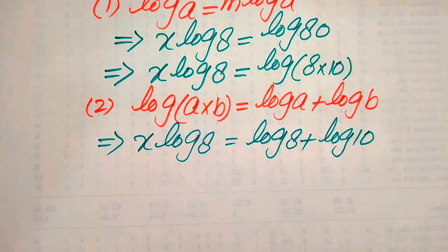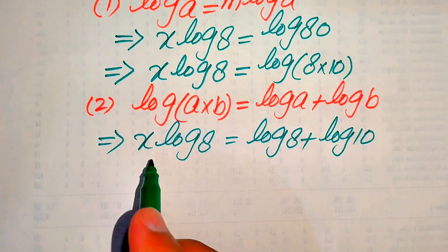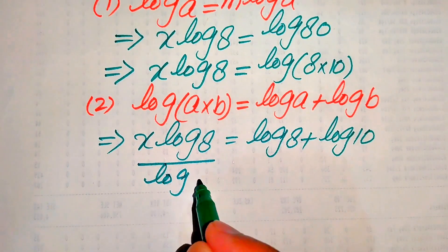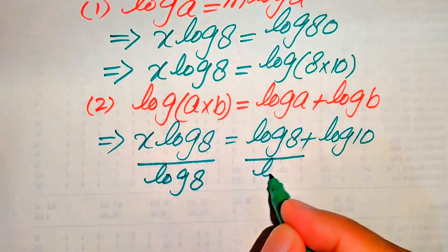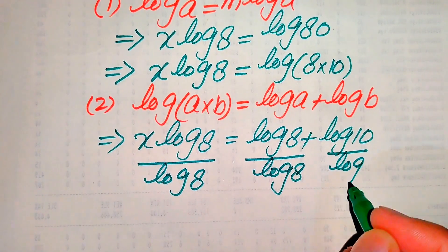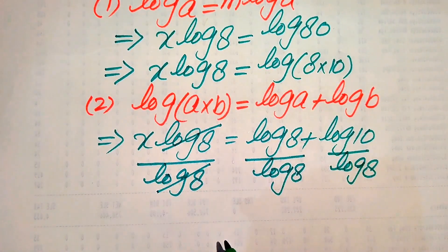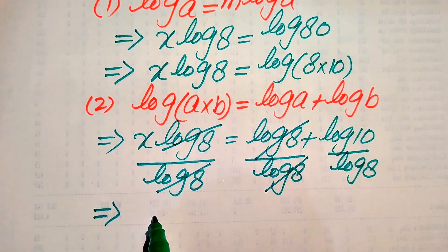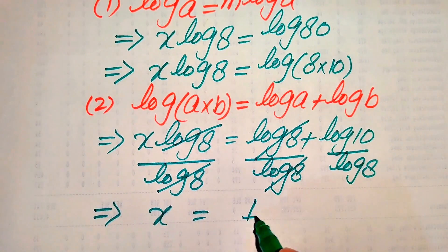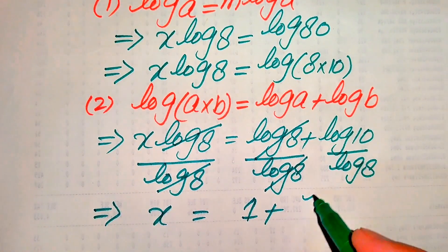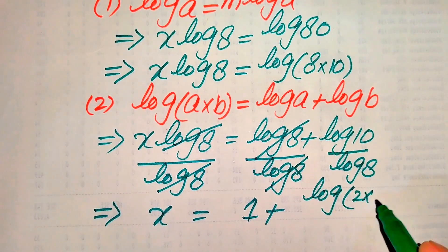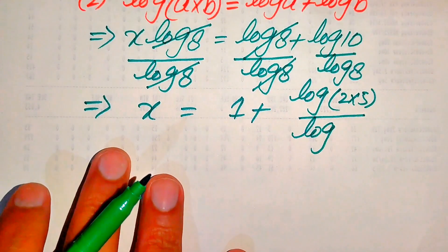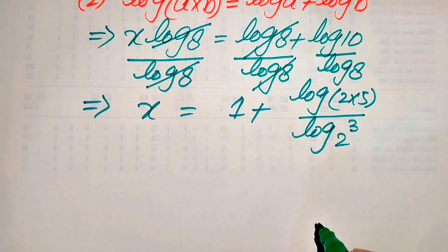Since we are solving for x, we need to eliminate log 8 from the left hand side. We divide both sides by log 8. This log 8 cancels with log 8 on the left, giving x equals 1 plus log of 10 divided by log of 8. We then write 10 as 2 times 5 and 8 as 2 cubed.